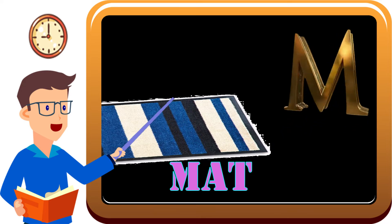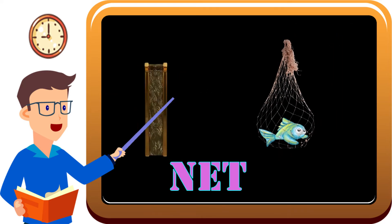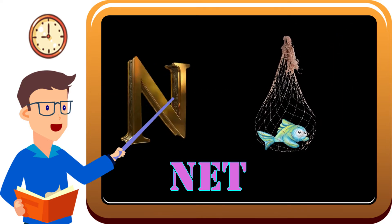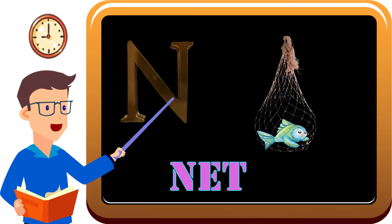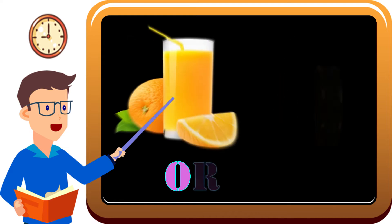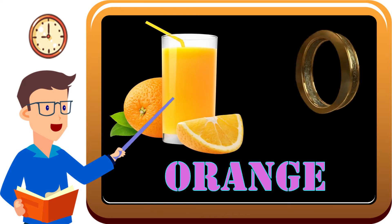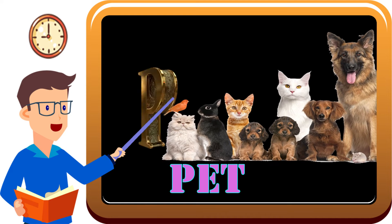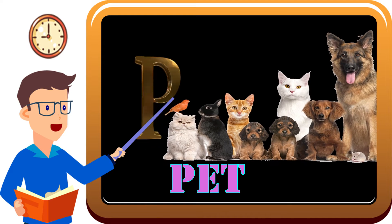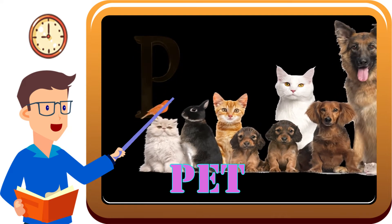M is for mat, m-m-mat. N is for net, n-n-net. O is for orange, o-o-orange. P is for pet, p-p-pet.